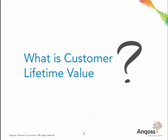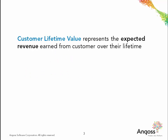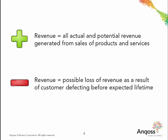Customer lifetime value represents the expected revenue — calculated using a dollar value or an index — that is to be earned from the customer over his or her lifetime, considering all possible products this customer could purchase. Positive revenues represent all actual and potential revenue from sales, while negative revenues represent the possible loss of such revenue as a result of the customer defecting before his or her expected lifetime with the company.